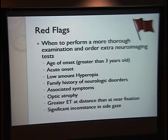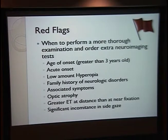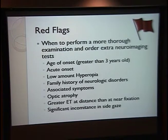Some red flags to look out for when evaluating a patient with esotropia: age of onset is very important — most esotropias present between six months and about two years. Acute onset is also much more concerning. If a patient has no visual problems and then within a short span develops a constant esotropia, that can be a red flag for some intracranial processes. Also, low amounts of hyperopia, family history of neurodisorders, associated symptoms such as occipital headaches, optic atrophy, greater esotropia at distance, and significant incomitance in side gaze are all red flags to watch out for.